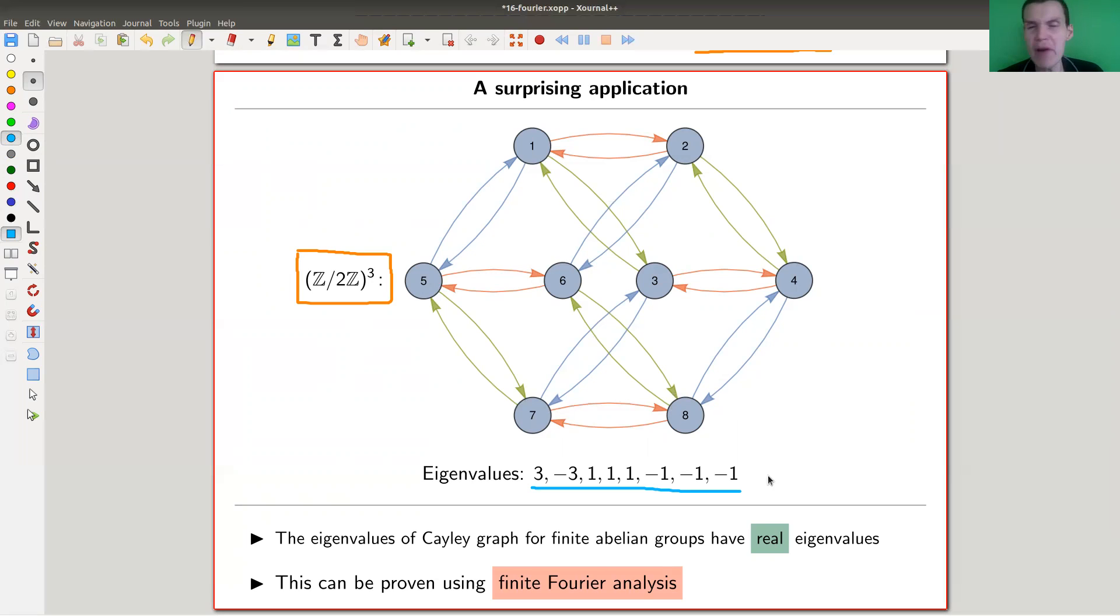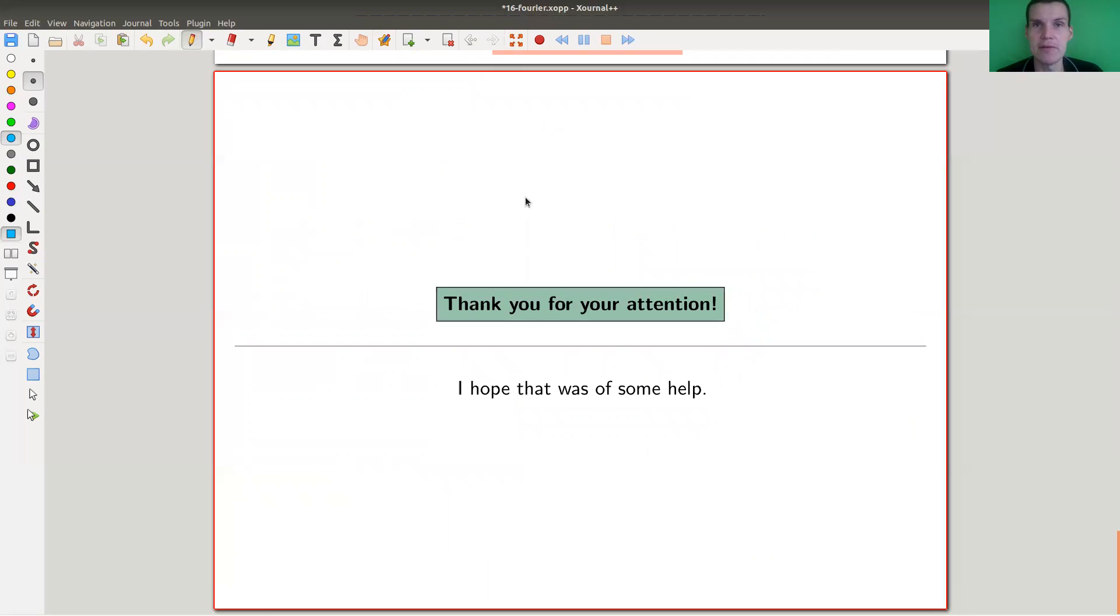The proof is not so hard, but it gets us too far off track. Anyway, so finite Fourier analysis on finite groups - well that's why it's called finite. It's like a discrete version. Sometimes various variations are also called discrete Fourier analysis - the literature not always uses the same terminology here.